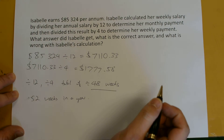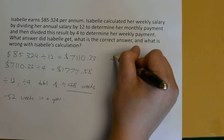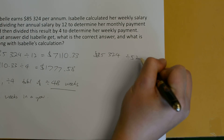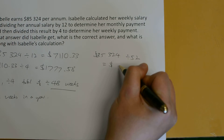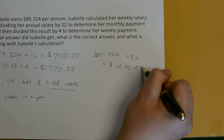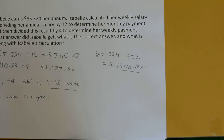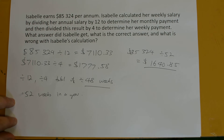What she should have done is divide her initial annual salary of $85,324 by 52. On the calculator that gives approximately $1,640.85, rounded to the nearest cent. So what was wrong is she divided by 48 instead of 52 because there are more than 4 weeks in most months.